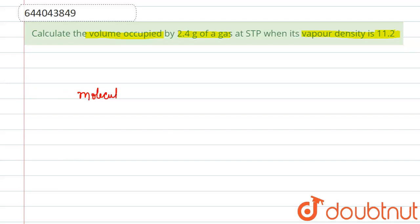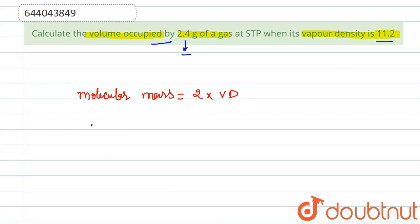The relation is: molecular mass equals 2 into vapor density (VD). So from here, if we put the value of vapor density from the question — vapor density is 11.2 — then molecular mass MM equals 2 into 11.2, which equals 22.4 grams per mole.